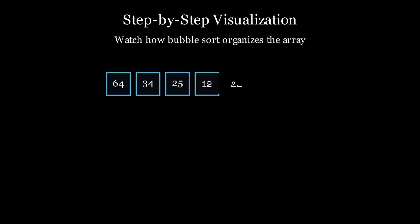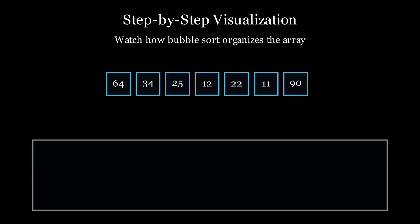Alright, now it's time for visualizing the bubble sort. Watch closely as the algorithm works. Here is our array: 64, 34, 25, 12, 22, 11, and 90. Let's start the first pass. In the first pass, we compare 64 and 34. They are in wrong order, so let's swap them. Next we compare 64 and 25. Again they are out of order, so swap.